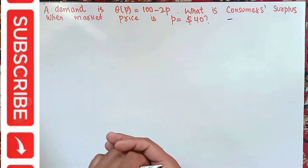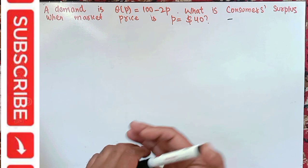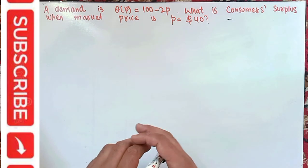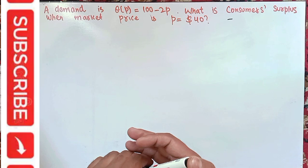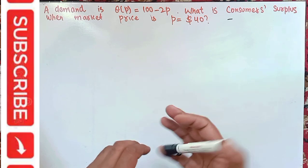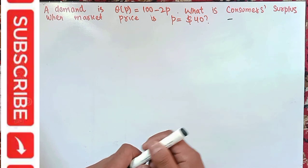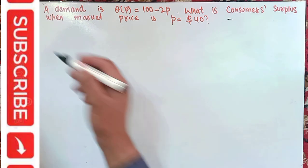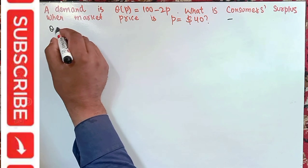How do we calculate the consumer surplus? Consumer surplus is simply the difference between what consumers are willing to pay for a good and the actual price paid. The difference between these two gives us the consumer surplus.